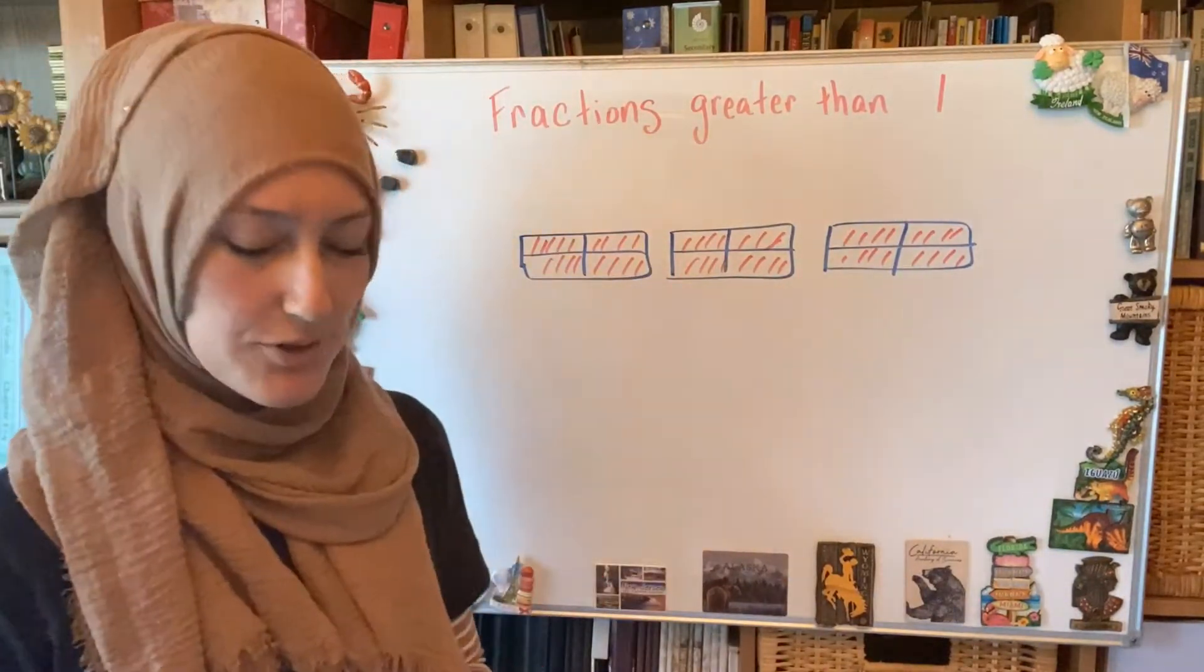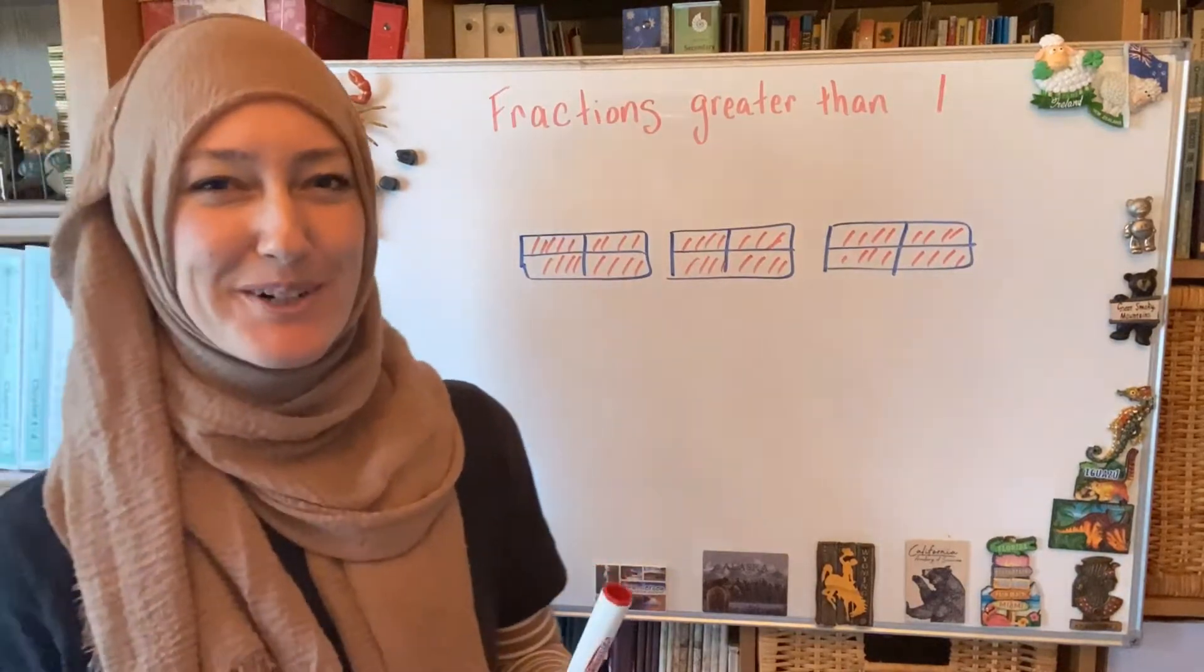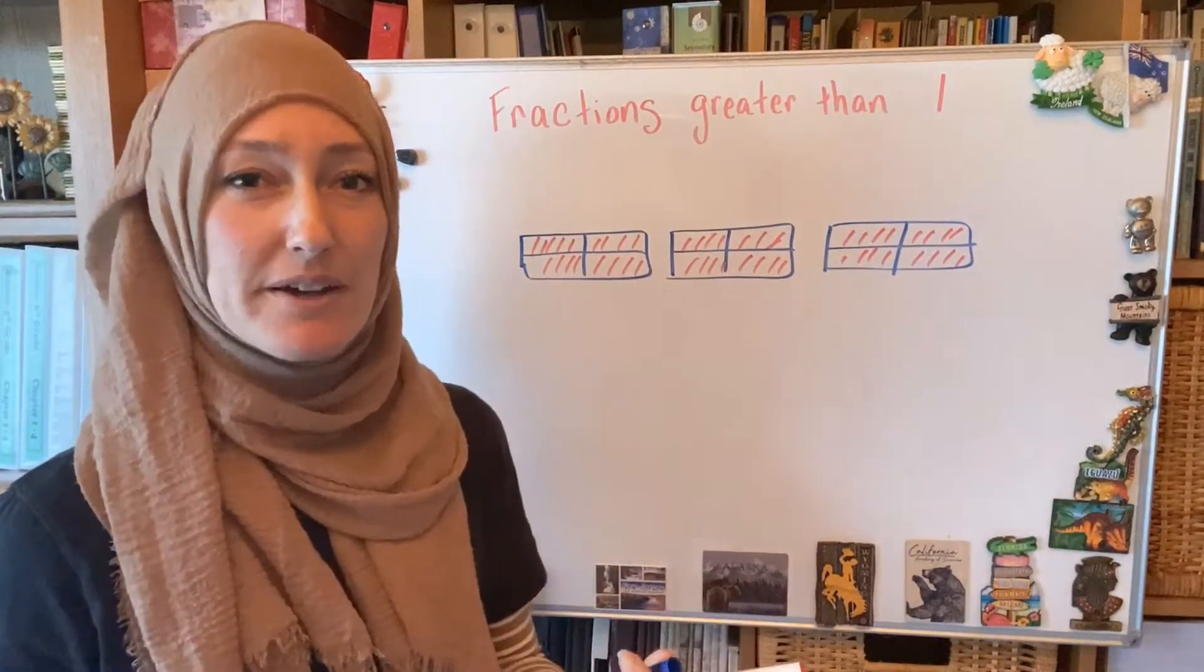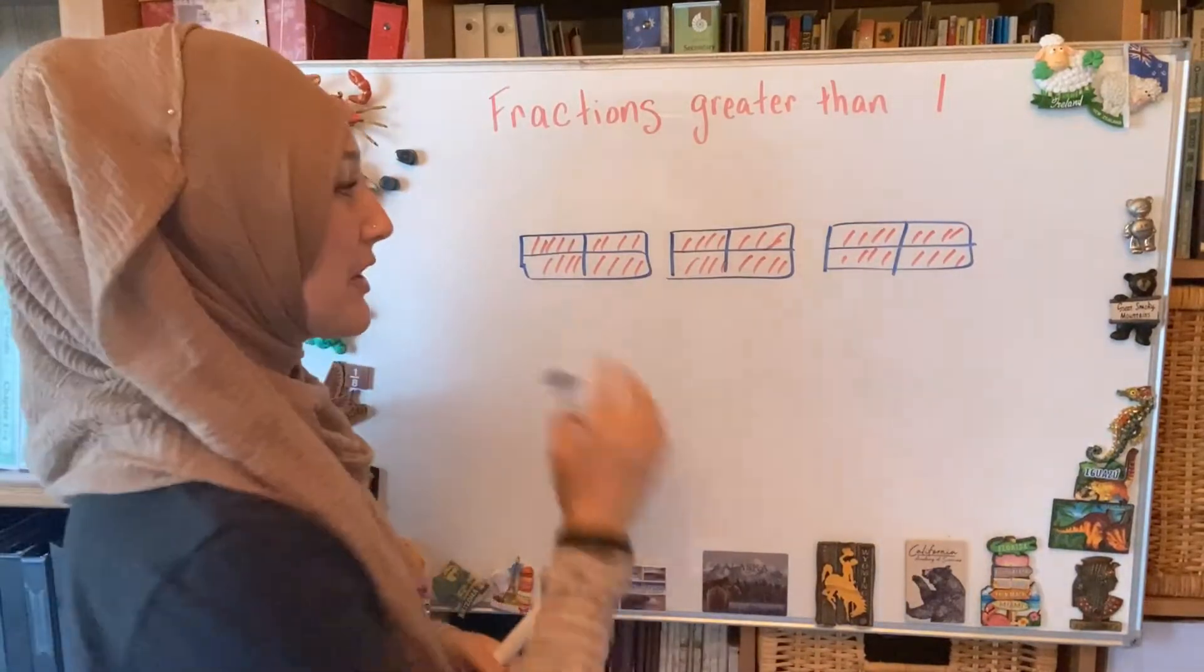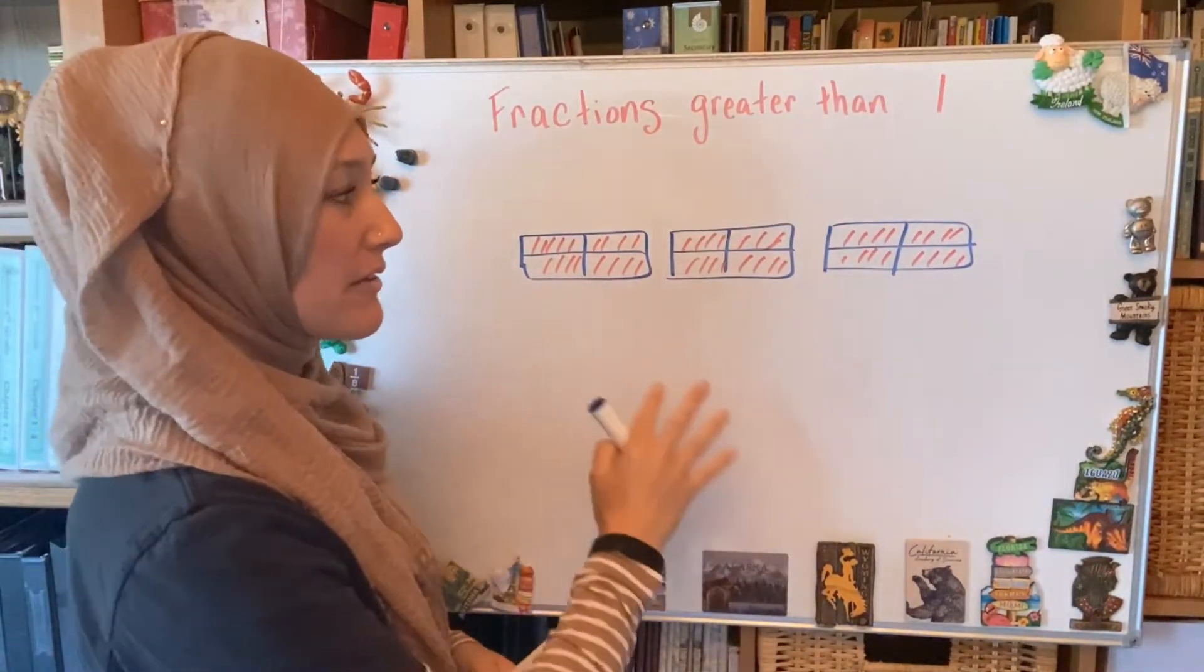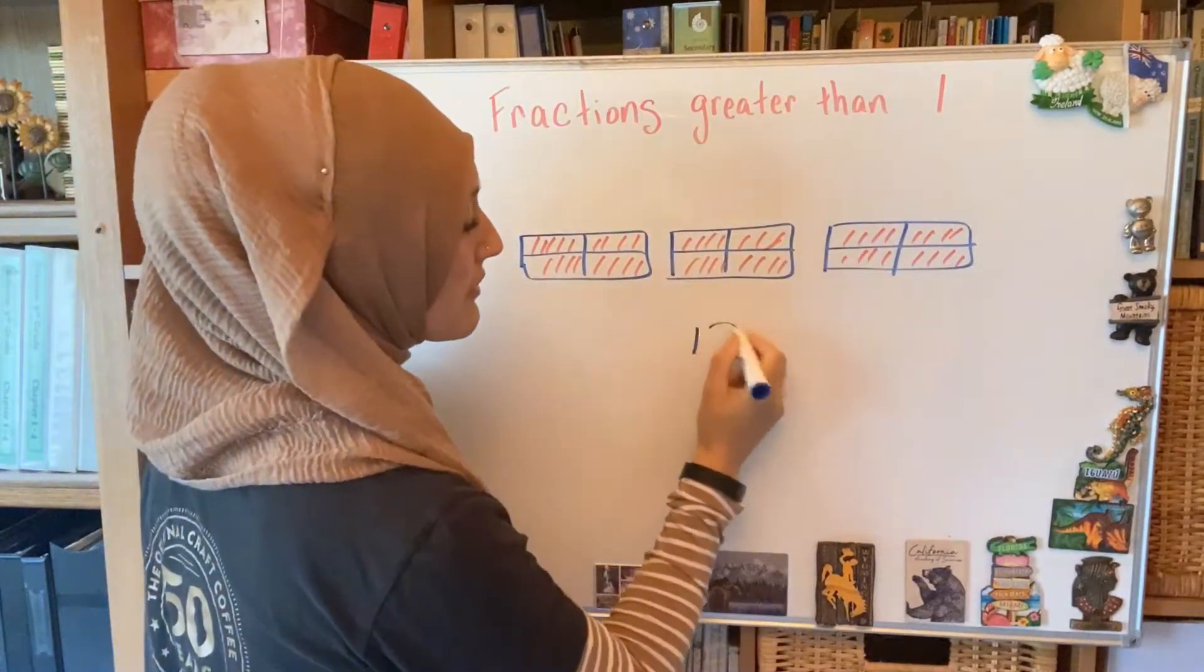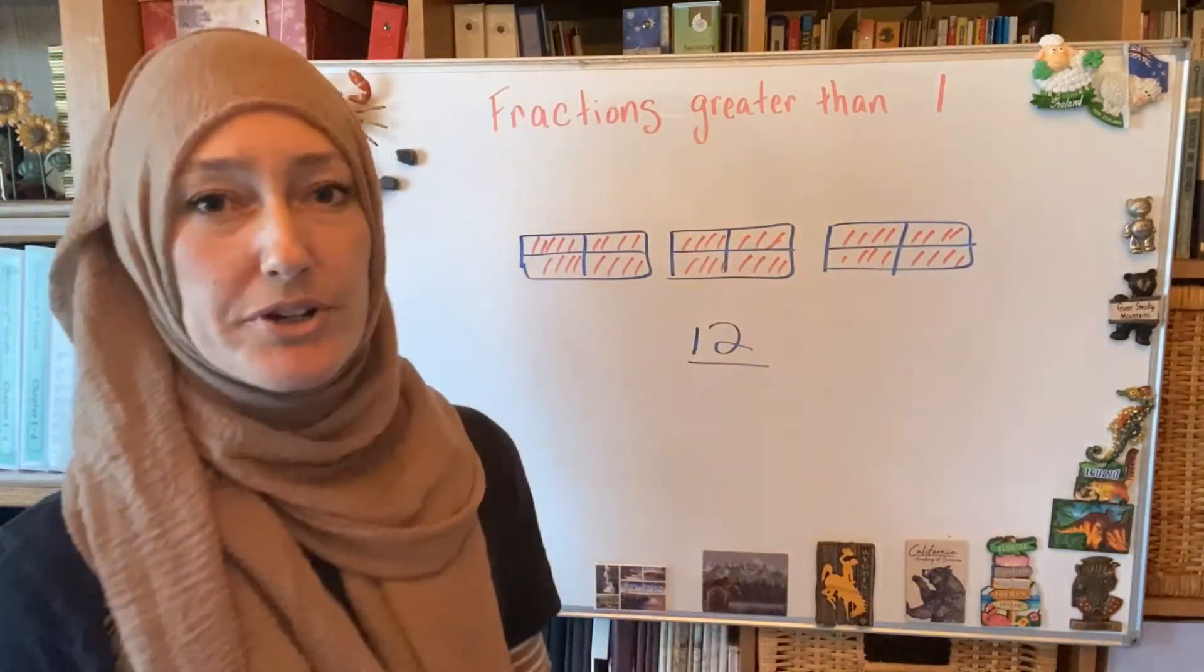The way that the fractions work is that the top number, the numerator, is how many pieces that you are talking about or how many shaded parts there are. So how many shaded parts are there in this? There's 4, 8, 12. So 12 is our numerator.